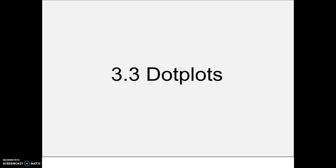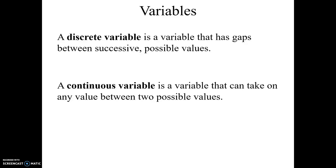In section 3.3, we will talk about dot plots and also about discrete and continuous variables. So let's talk about discrete variables. A discrete variable is a variable that has gaps between successive possible values.